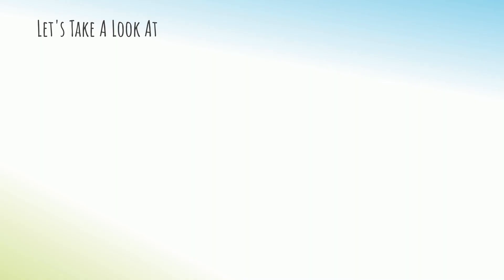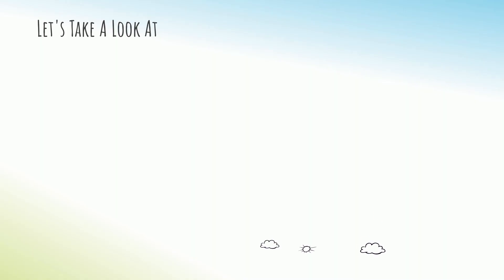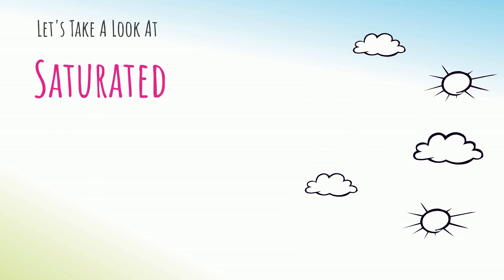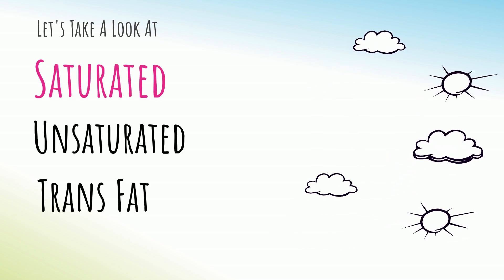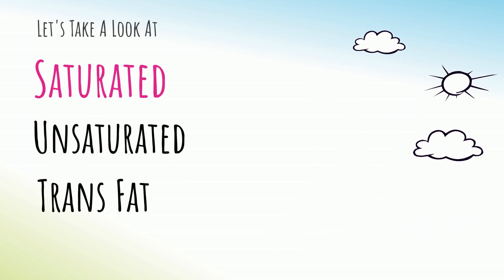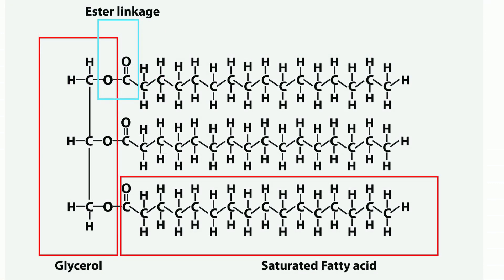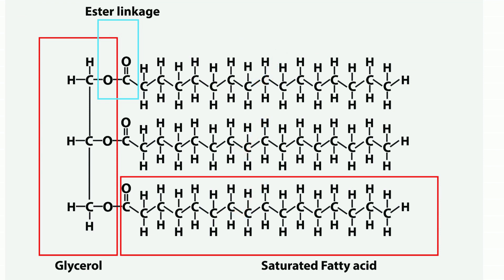Let's take a look at the difference between saturated fats, unsaturated fats, and trans fats. A fat molecule is composed of a three-carbon glycerol head and three fatty acid tails. The tails are a chain of carbons bound to hydrogen atoms, called a hydrocarbon chain.